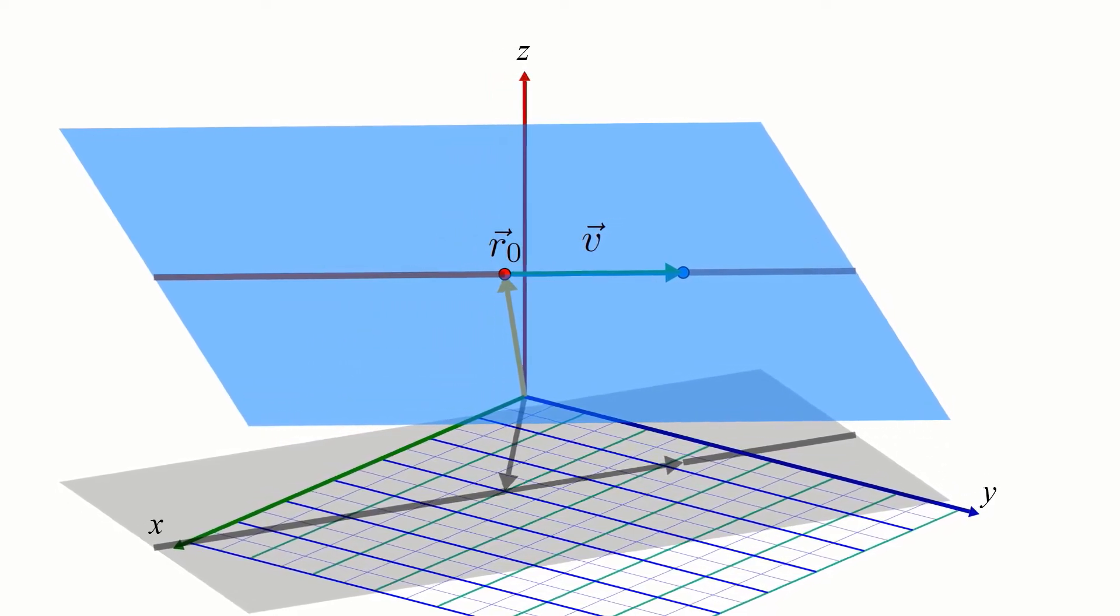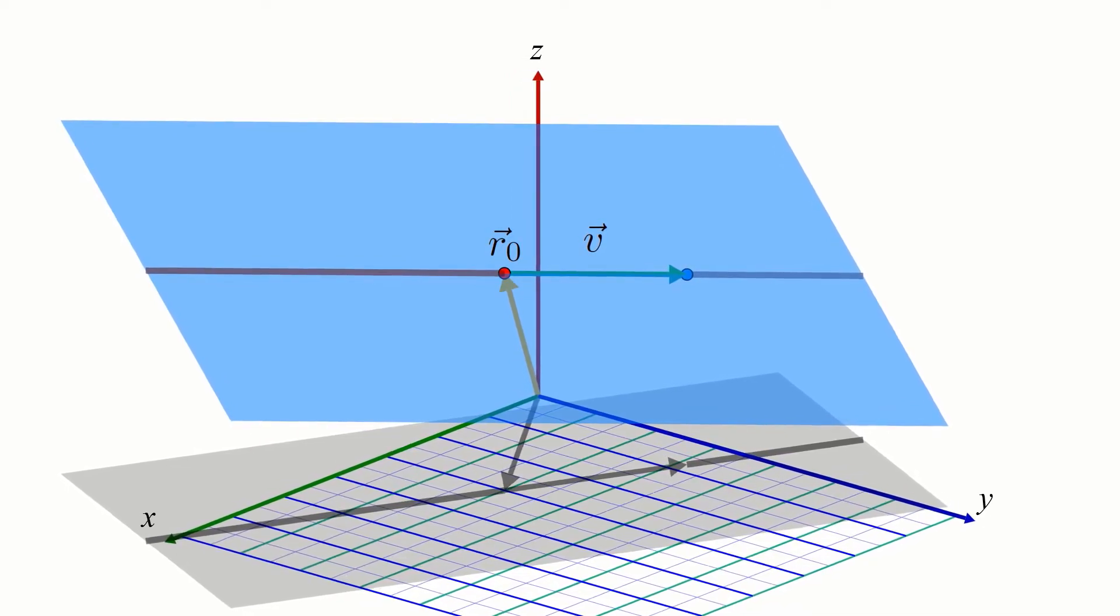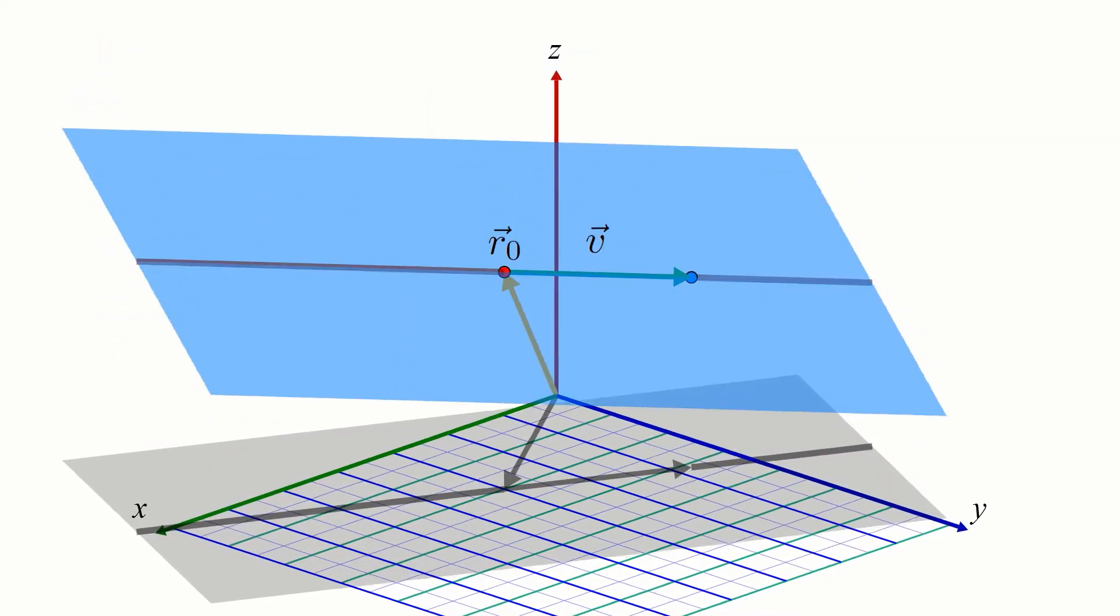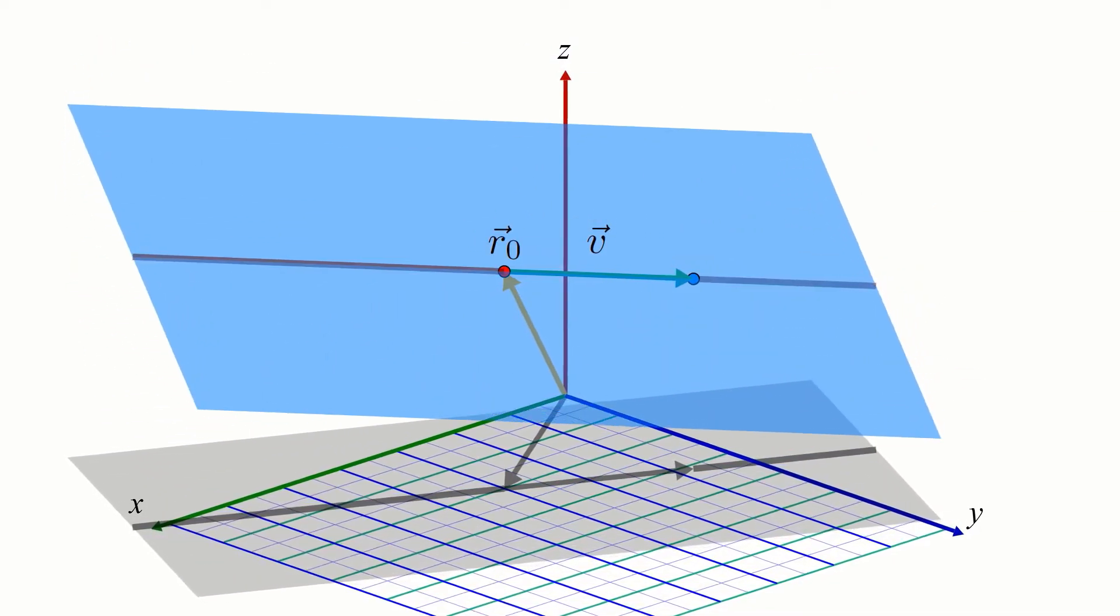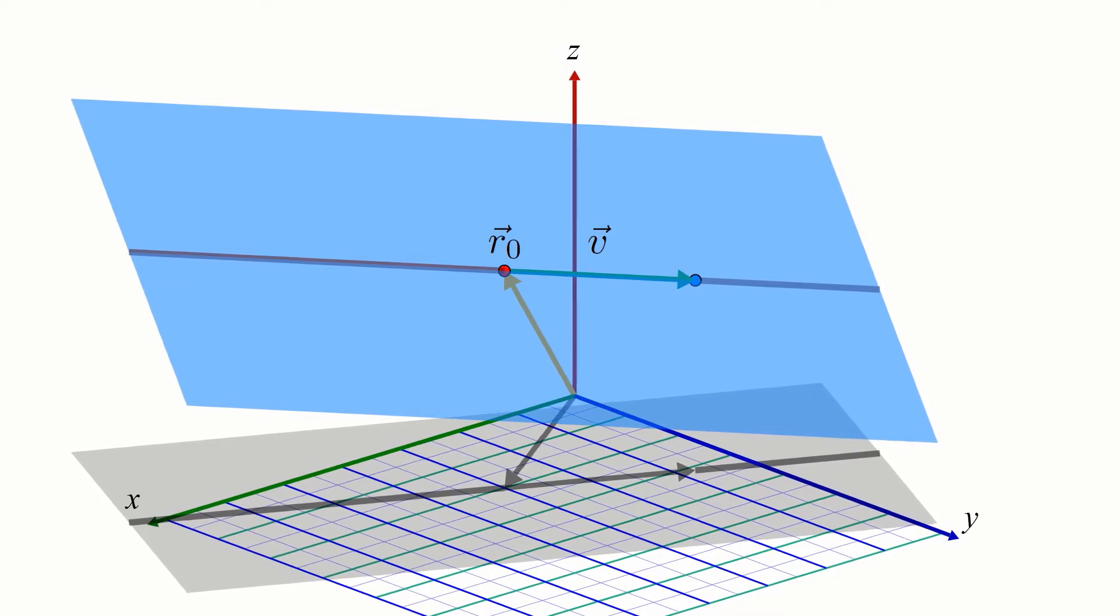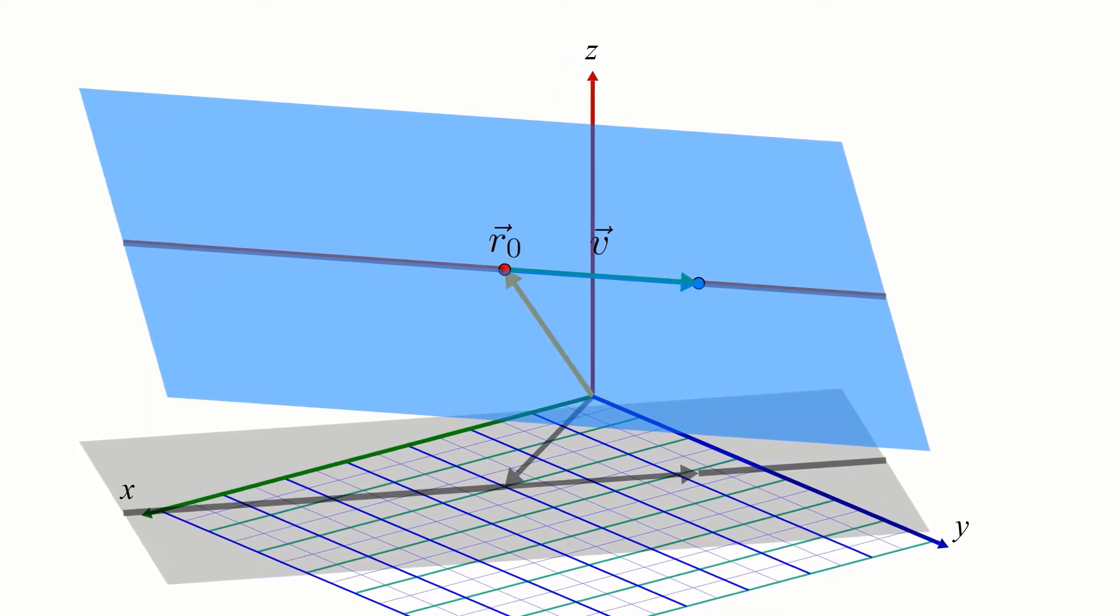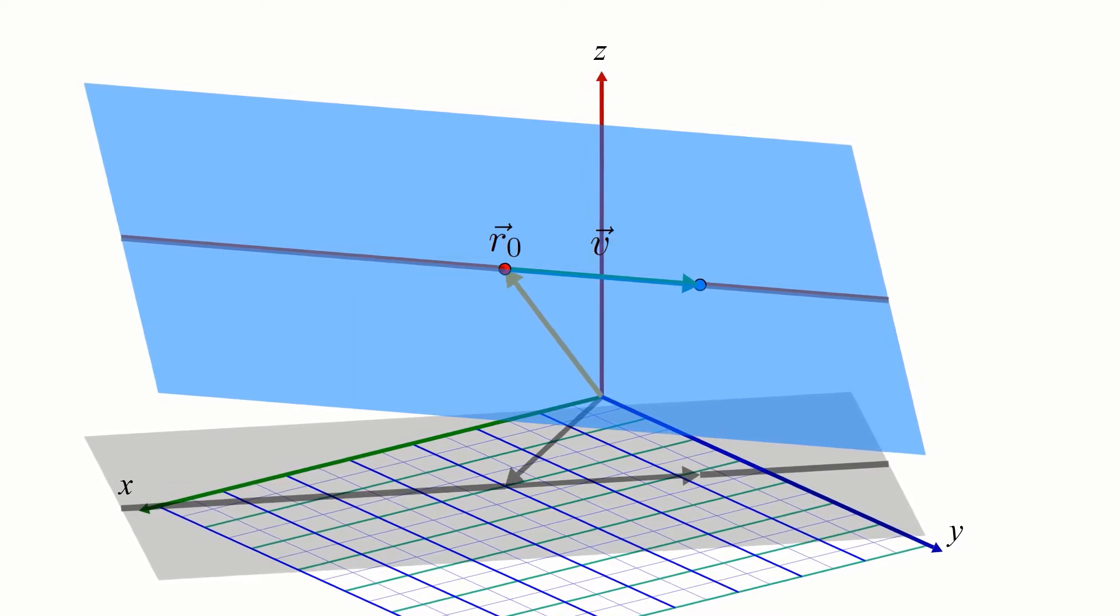It turns out there are infinitely many planes parallel to a given direction vector. All we have to do is rotate our plane about the direction vector v to obtain a different, but equally valid plane satisfying our criteria. So we haven't actually succeeded in fully describing the plane's orientation. So how do we fix this?